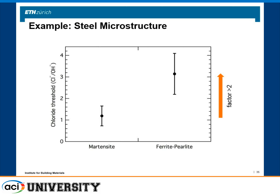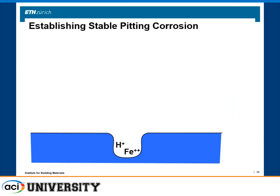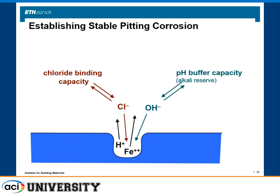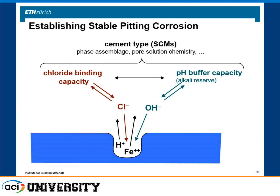Another important aspect is establishing stable pit corrosion. In a pit, ferrous ions and H⁺ are released and move out, while chloride, hydroxide, and other negatively charged ions move in. If there is too much hydroxide around, it preferentially enters the pit over chloride and the pit can repassivate — which quite often happens in initial stages of pit initiation. The release of hydroxide depends on the pH buffer capacity of the cementitious system near the pit, and the release of chlorides depends on the chloride binding capacity. Both are strongly interrelated and dependent on cement type.